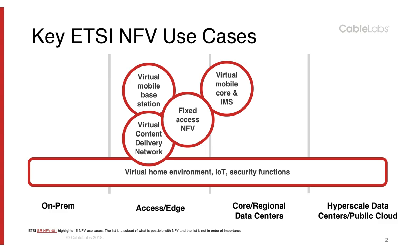The first bucket is virtual mobile base station and virtual mobile core and IMS. With 5G around the corner, this whole category is very important. It includes virtual radio area network or VRAN, the mobile core network virtual EPC, all-packet core optimized for 5G, IP multimedia subsystem for things like voice over IP, edge computing, and all of this combined will enable things like advanced 5G use cases such as network slicing and edge computing applications.